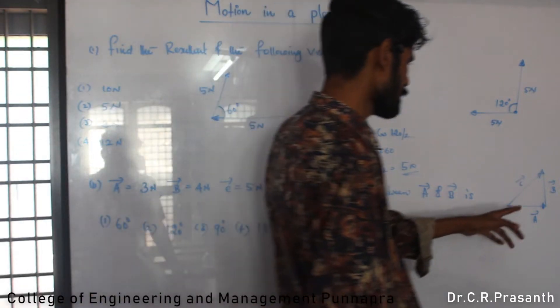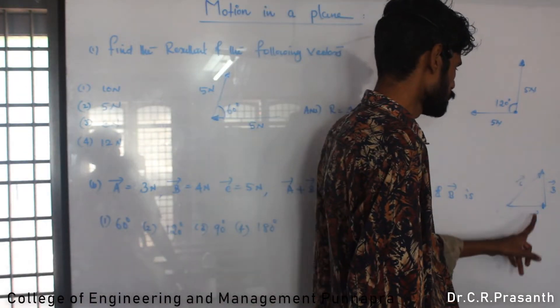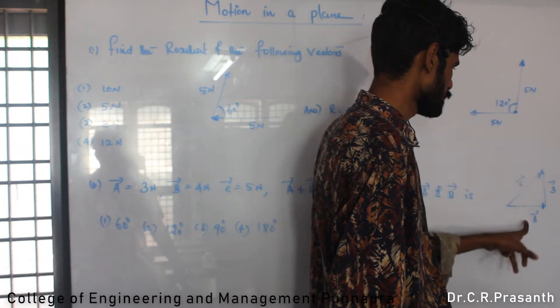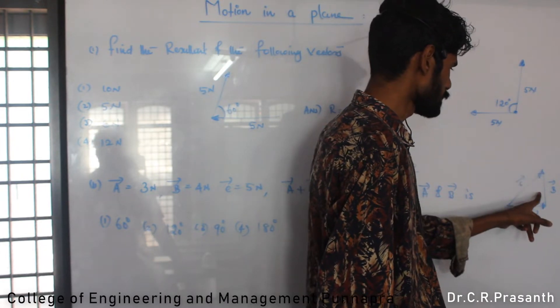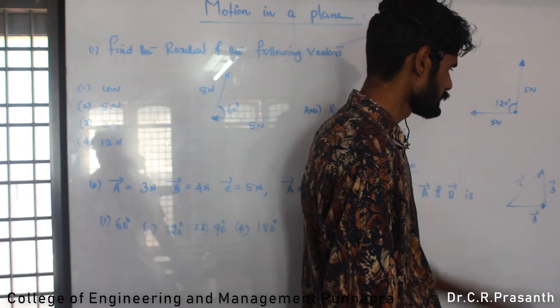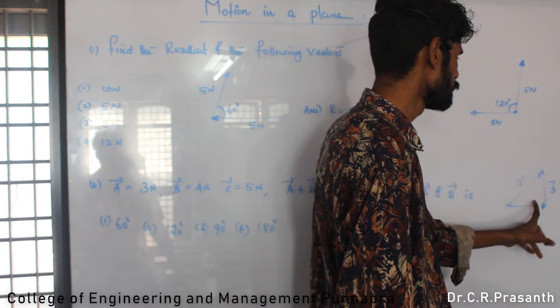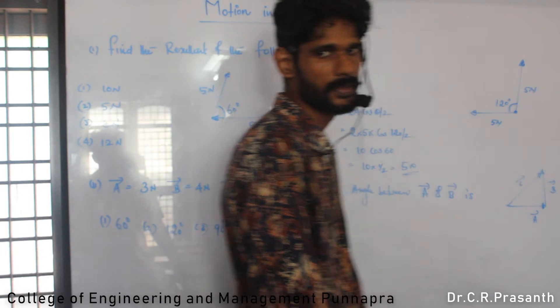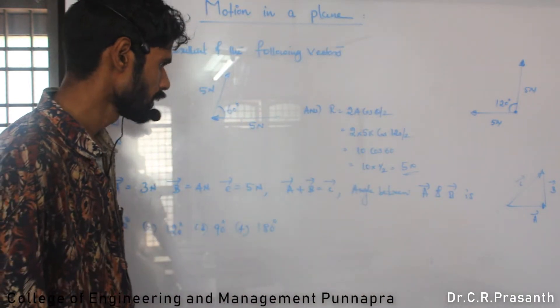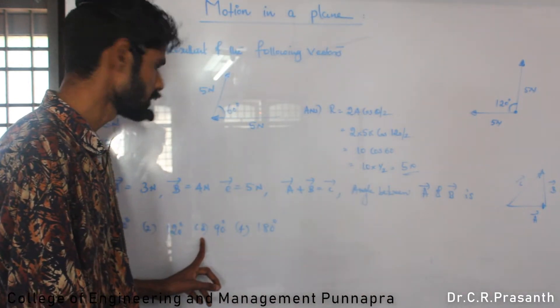It's a right angle triangle. So A, B, C. First vector, second vector, third vector. 3, 4, 5. The angle between A and B equals the angle between vectors. The angle is 90 degrees. So angle between A and B equals 90 degrees. Option 3 is correct.